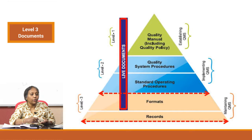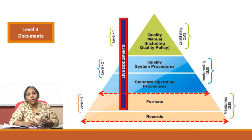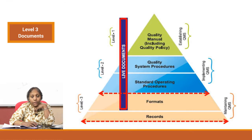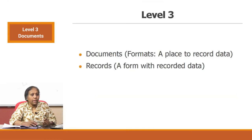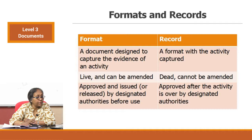Level 3 documents comprise formats and records. Formats are live documents — if the format needs amendment to capture more data or you feel it is not good enough, you can change it. Whereas records are documents on which data has been captured and cannot be amended. Format is a document designed to capture the evidence of an activity. A format with the activity captured becomes a record. Formats are live and can be amended; records are dead and cannot be amended.